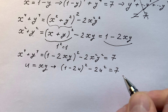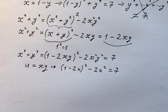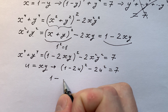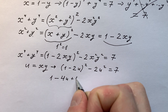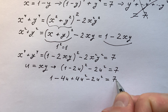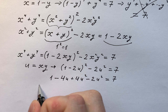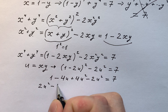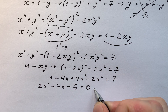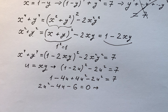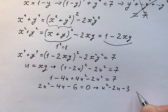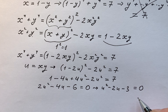It's a really easy quadratic equation. Expanding: 1 minus 4u plus 4u² minus 2u² equals 7, which gives us 2u² minus 4u minus 6 equals 0. Dividing both sides by 2, we get u² minus 2u minus 3 equals 0.